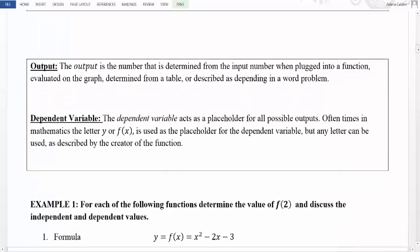Similarly, we also have an output. The output is the number that's determined from the input number when plugged into a function, evaluated on a graph, determined from a table, or described as depending in a word problem. Once we've plugged our input number in, we apply all the rules to that number, and the resulting number is the output. On a graph, we look at where that value was for the input and find the corresponding output. Similarly on a table.